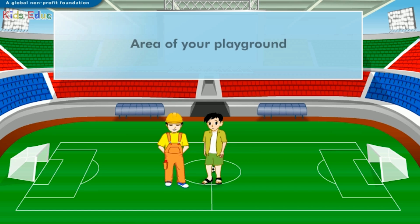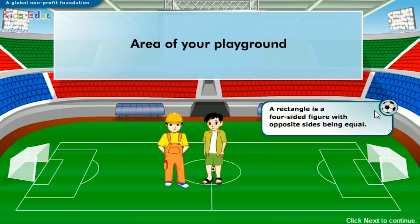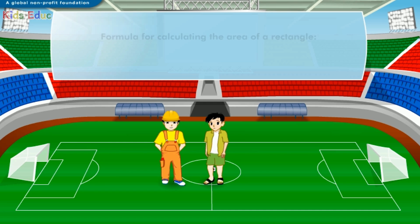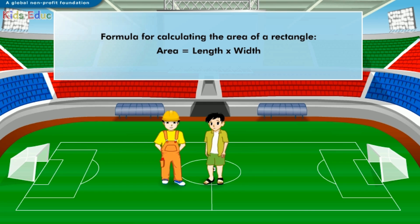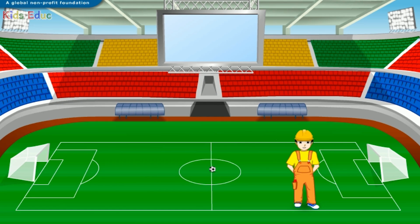Wouldn't you like to know the area of the soccer field you're playing in? I'm sure you would. Before doing that, let's take a look at the definition of a rectangular object. A rectangle is a four-sided figure with opposite sides being equal. To calculate the area of a rectangle, multiply its length with its width. Area is measured in square units — a square unit is a square in which each side has a length of one unit. The area of an object is the number of unit squares it takes to cover the object.